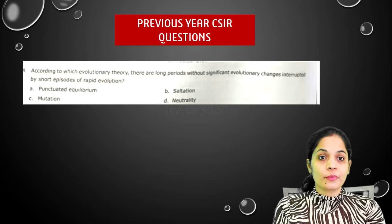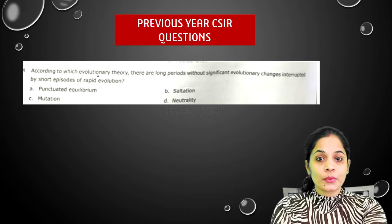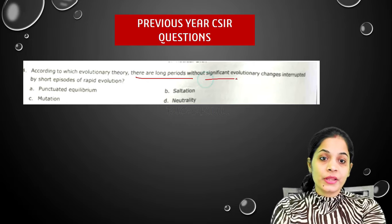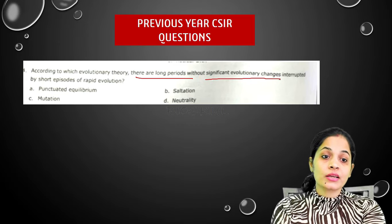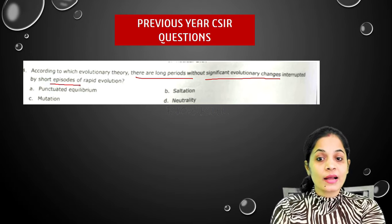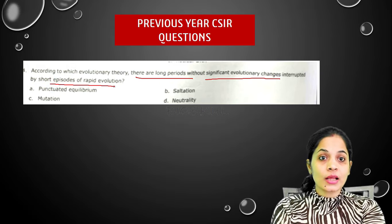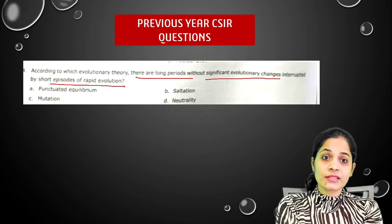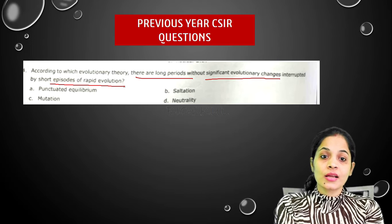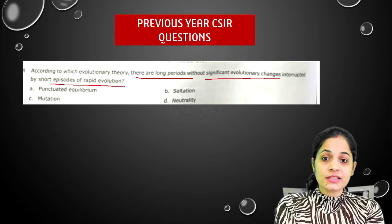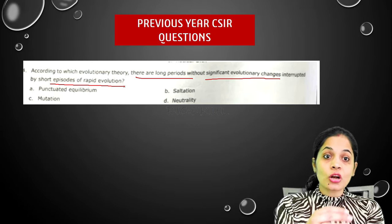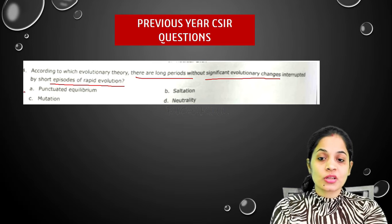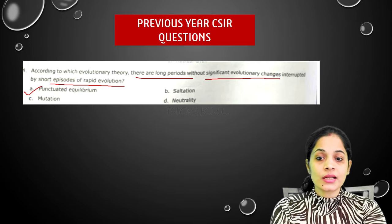Let's look at a question: According to which evolutionary theory are there long periods without significant evolutionary changes interrupted by short episodes of rapid evolution? The answer is punctuated equilibrium — a period of no significant change which is interrupted by a short period of rapid change. The correct answer is punctuated equilibrium.